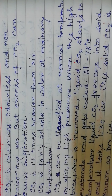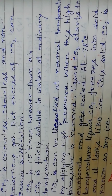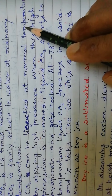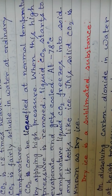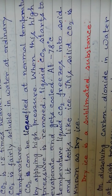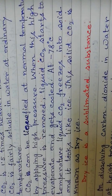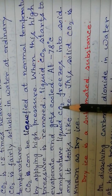Carbon dioxide is fairly soluble in water at ordinary temperature, which is why it is not collected by the downward displacement of water. Carbon dioxide can be liquefied at normal temperature by applying high pressure. When pressure is released, liquid carbon dioxide starts to evaporate, turning to vapor or gas, and due to this vaporization it starts to cool. When the temperature reaches minus 78 degrees centigrade, the liquid carbon dioxide freezes into solid.